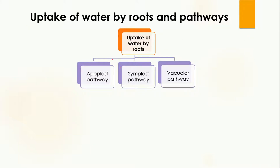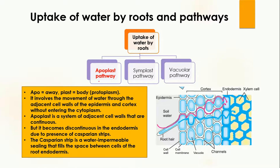There are three pathways involved in the uptake of water by the roots: one is the apoplast, the second is the symplast, and the third is the vacuolar pathway. Let's study them one by one. First, the apoplast pathway. The word 'apo' means away and 'blast' means protoplasm. When we talk about protoplasm, we mean cytoplasm plus nucleus.